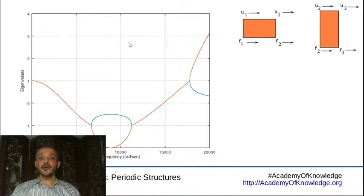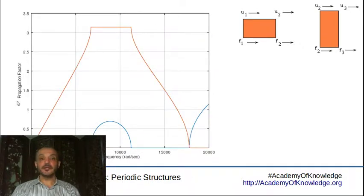So we will get a very similar looking variation of the eigenvalues and, as expected, also a similar variation in the stop and the pass bands. Now we can see clearly the stop band here. It extends somewhere between 6,000 radians per second to 11,000 or 12,000 radians per second.